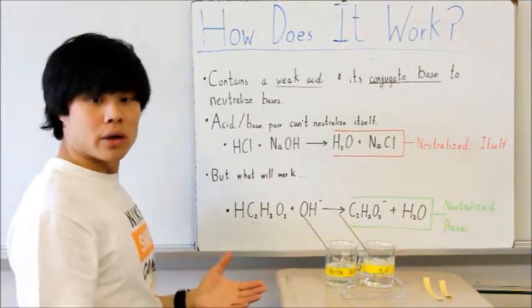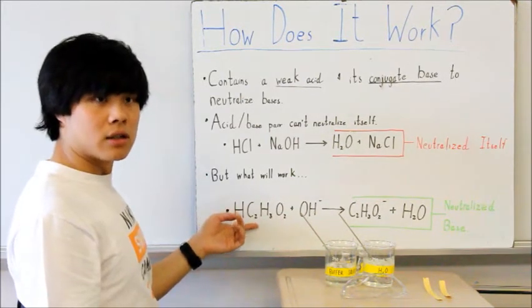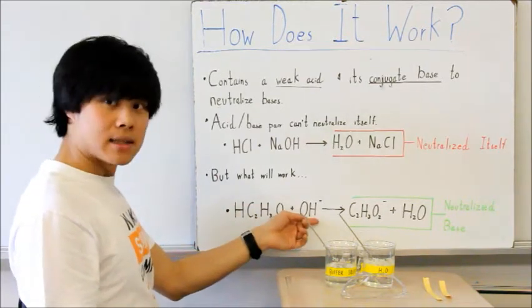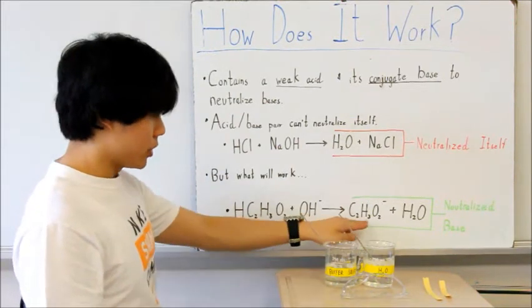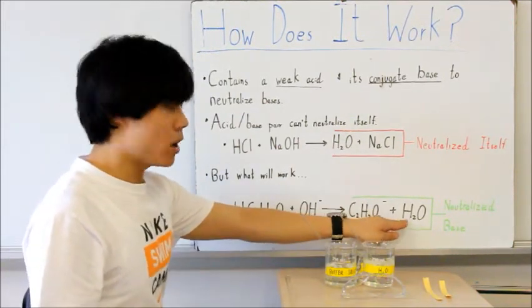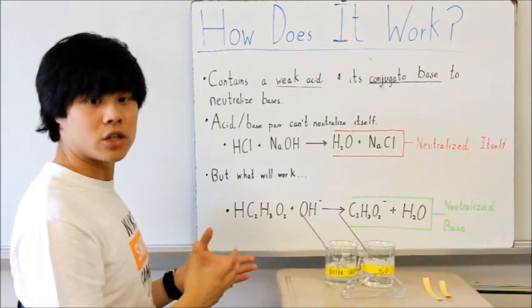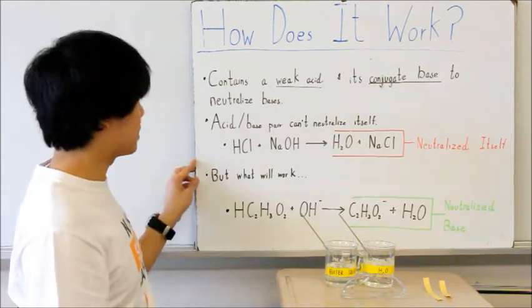However, what will work is if you use acetic acid and sodium acetate. Therefore, if you were to add a strong base to your acetic acid buffer, you would produce acetate ion and water. Therefore, neutralizing your strong base and keeping the pH of your solution relatively close to what it originally was before you added the base.